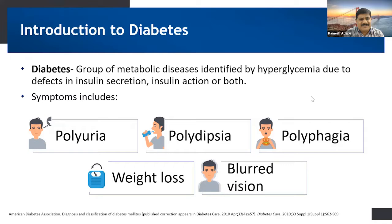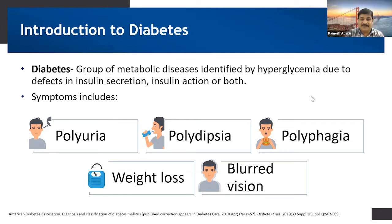All of us know diabetes is a group of metabolic diseases which are characterized by hyperglycemia. It may be because of affecting the insulin secretion or insulin action or even both, but ultimately the patient suffers because of decreased insulin activity or because of the hyperglycemia.